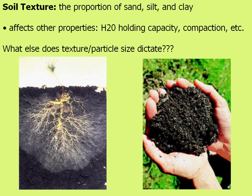Soil texture is one of the major physical properties that affects other soil properties. Soil texture is basically the proportion of sand, silt, and clay — three different sizes of soil particles, with sand being the largest, then silt, then clay. The size of these particles determines how permeable the soil is, how well it holds nutrients, how water percolates through it, and how susceptible it is to erosion or leaching.